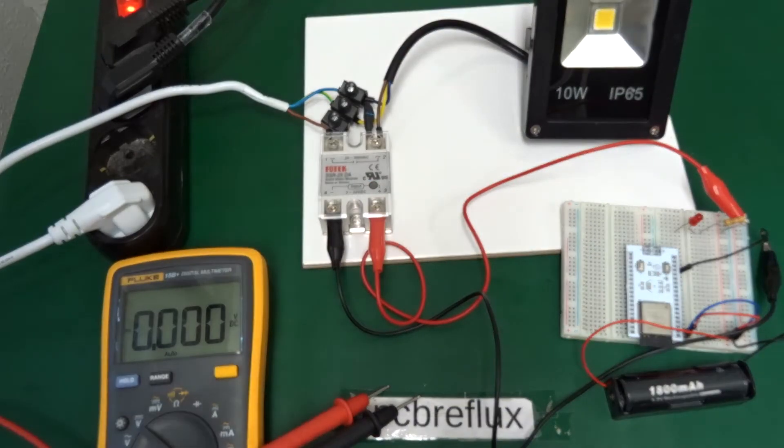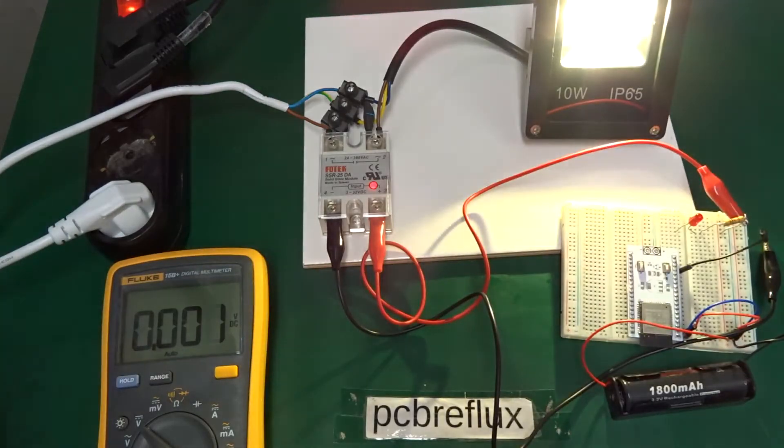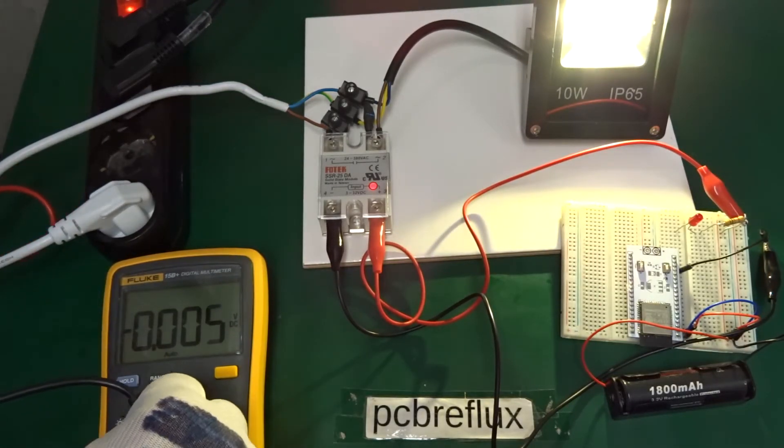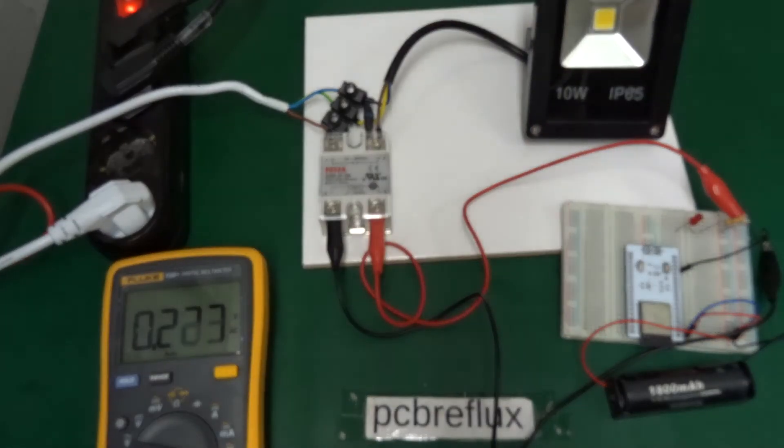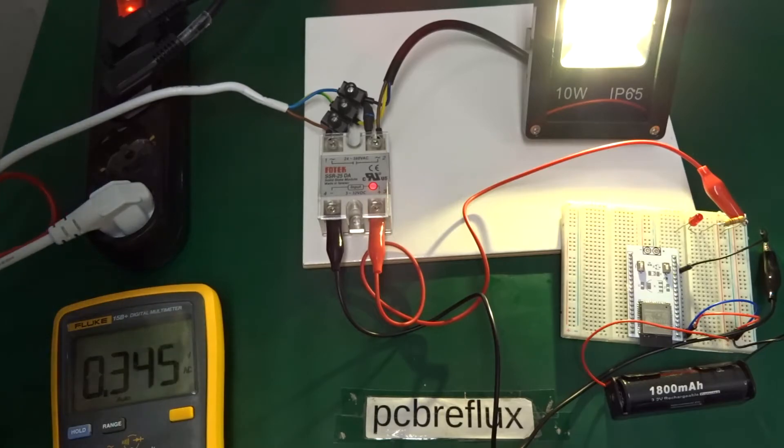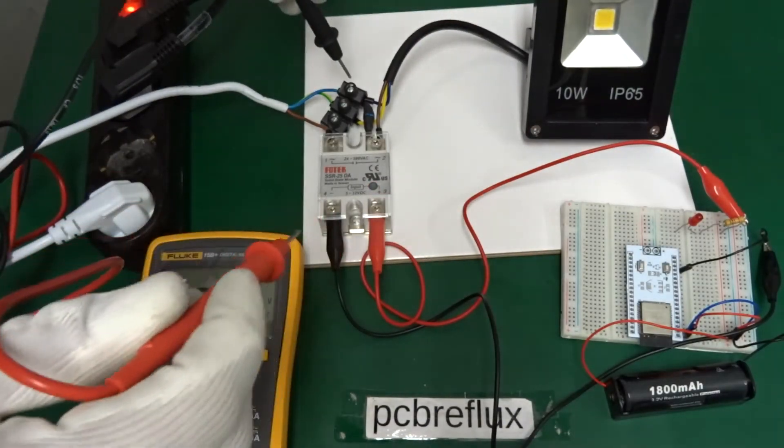And for completeness, I also switch my multimeter back to the AC range. And then just for completeness, let's measure the voltage directly between the LED.